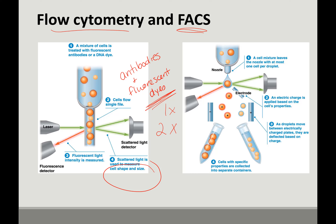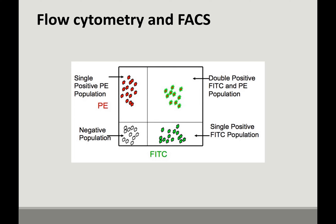FACS allows you to actually sort these cells — not only are you collecting characteristic data, but you can sort them based on those characteristics into different tubes. Then you could manipulate cells; for instance, if you're studying cells of the immune system, you could look at what macrophages do, what neutrophils do, or what cytotoxic T cells do. It's a really important technique in cell biology.